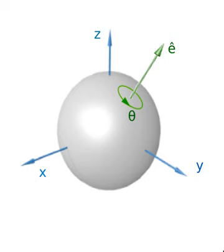Mathematically, a rotation is a map. All rotations about a fixed point form a group under composition called the rotation group of a particular space.